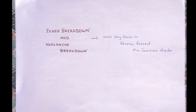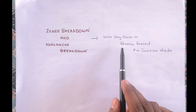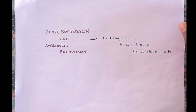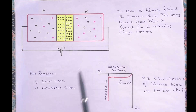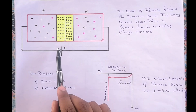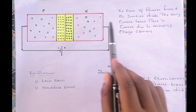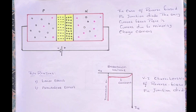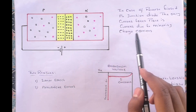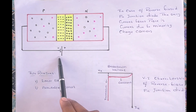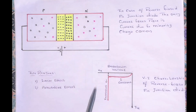These two types of breakdowns will occur only in case of reverse bias of a PN junction diode. In a reverse biased PN junction diode, the negative terminal of the battery is connected to the P side and the positive terminal is connected to the N side. The only current that flows is due to minority charge carriers, and due to this reverse bias condition the width of the depletion region is wider.